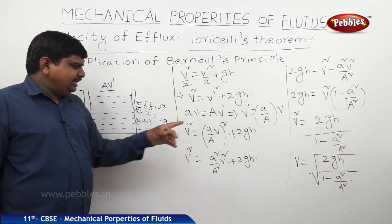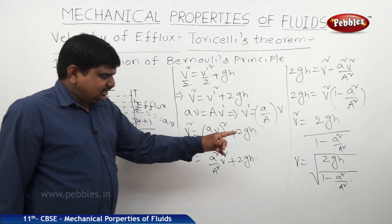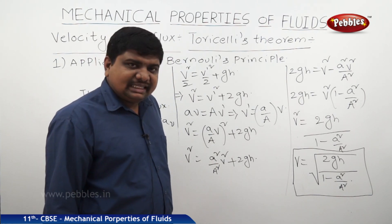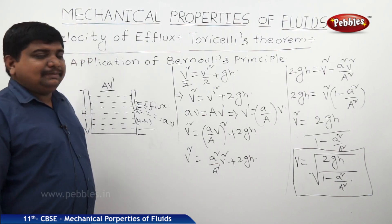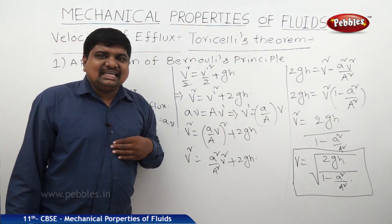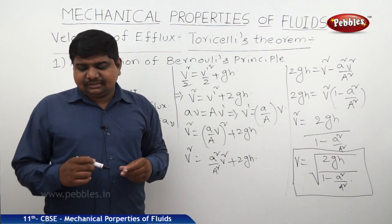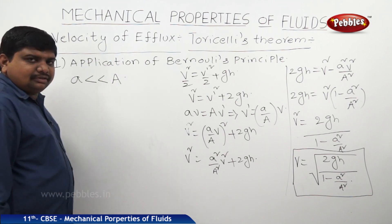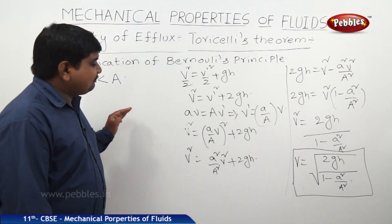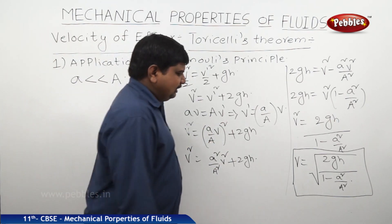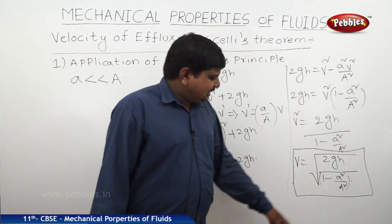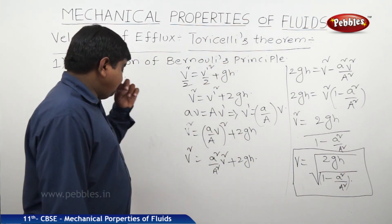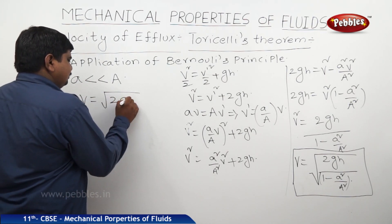So the velocity of efflux through the cross-sectional area small a is v = √[2gh / (1 − a²/A²)]. This is the expression for velocity of efflux, also called Torricelli's equation for fluid mechanics. As a special condition, when small a is much less than capital A, the term a²/A² is negligible compared to 1, so the denominator can be dropped, giving simply v = √(2gh).